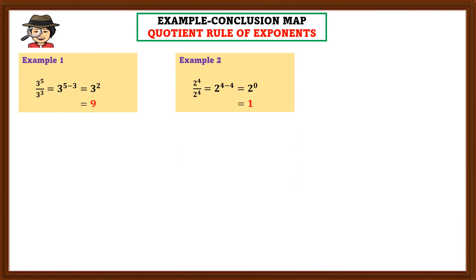The second sample: 2 raised to 4 over 2 raised to 4 is equal to 2 raised to 4 minus 4. When you subtract 4 minus 4, the difference is 0. That's why we have 2 raised to 0. When you simplify 2 raised to 0, the value is 1. Take note: any number or expression raised to 0 is equal to 1.